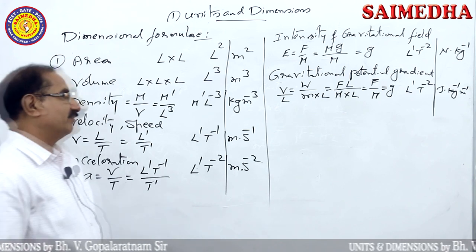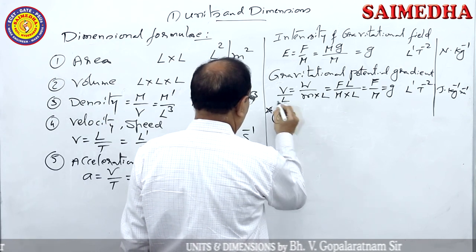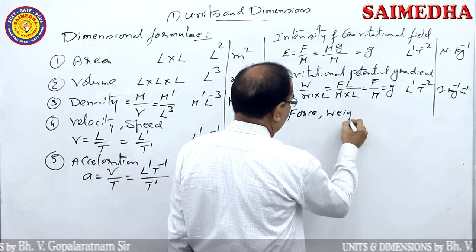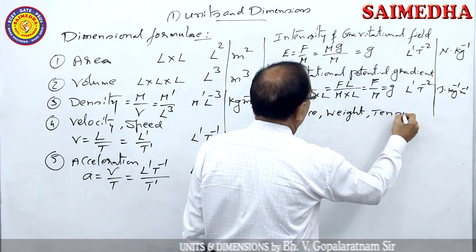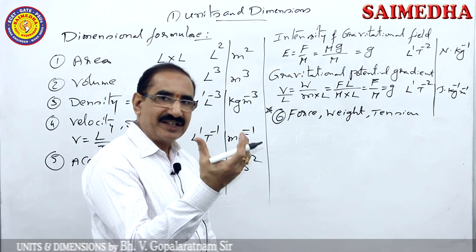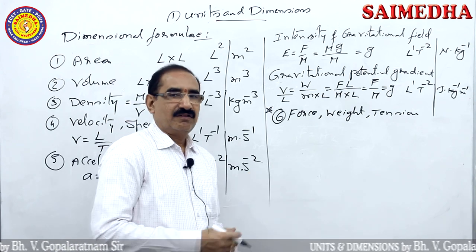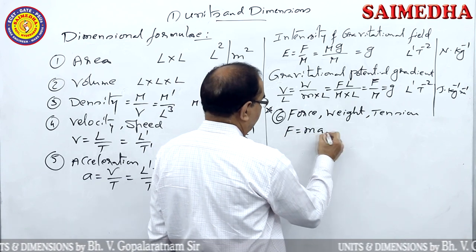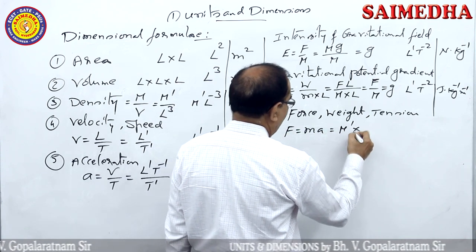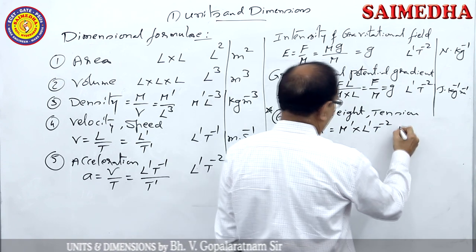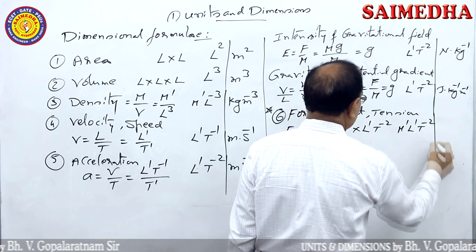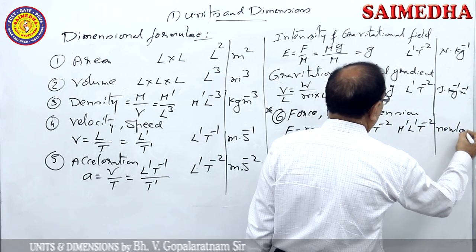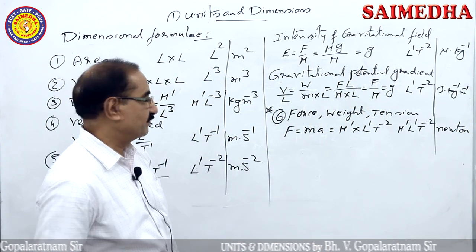Force, weight, and tension all share the same dimensional formula. Force F = ma: mass M¹, acceleration L¹T⁻², together M¹L¹T⁻². The unit of force is Newton.